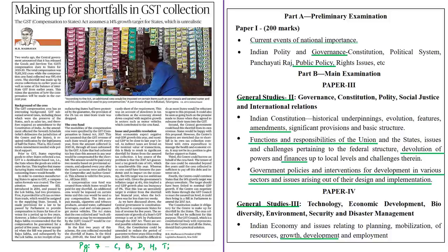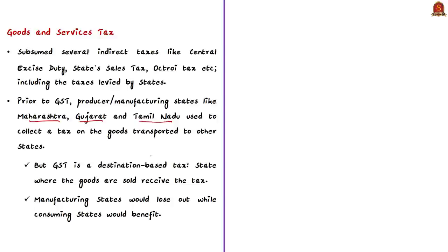This analysis is about goods and services tax and GST compensation payable to a few states. In India, we have producer or manufacturing states like Maharashtra, Gujarat, and Tamil Nadu where most production happens. Before GST, these states collected tax on goods transported to other states. But GST is a destination-based tax — the state where goods are sold receives the tax. For example, if a good is manufactured in Tamil Nadu and sold to a final consumer in Andhra Pradesh, the tax is paid to Andhra's government.